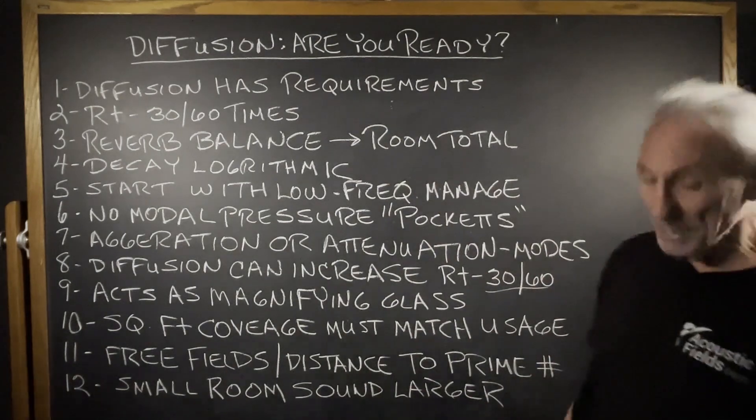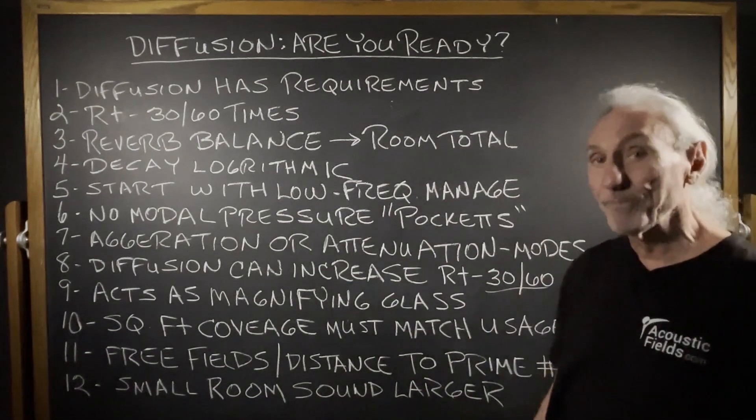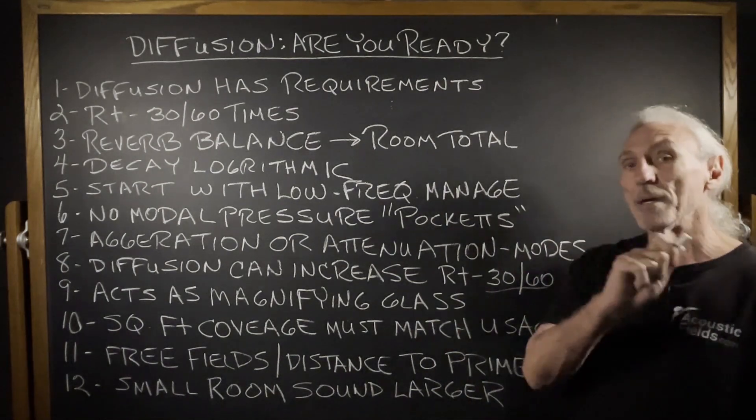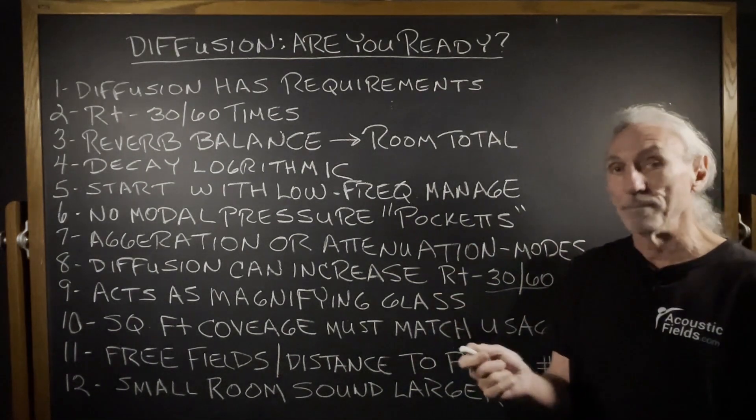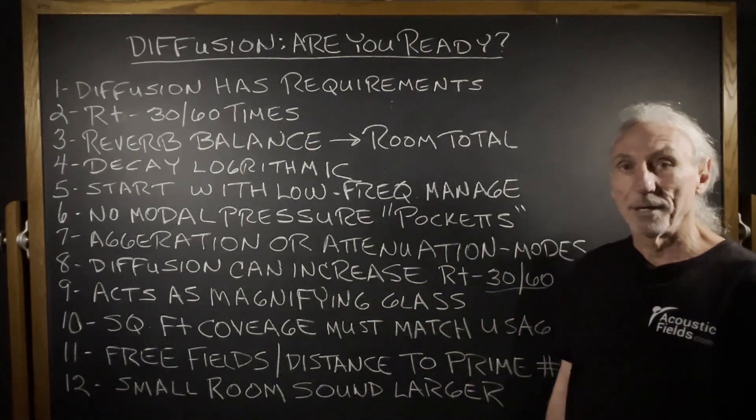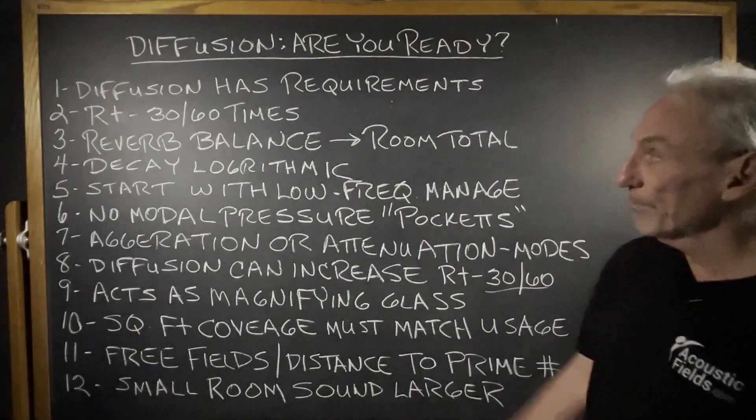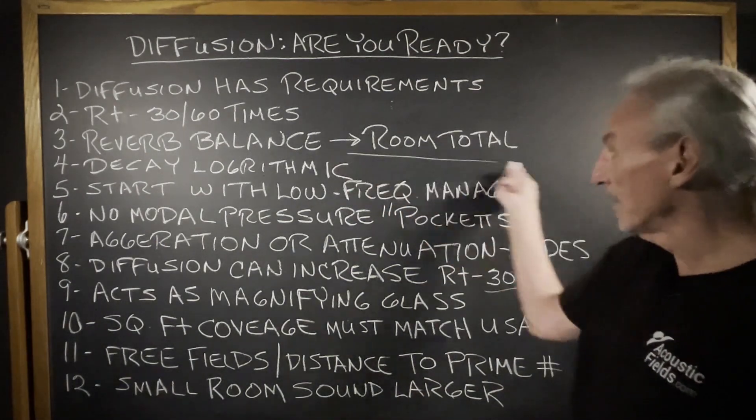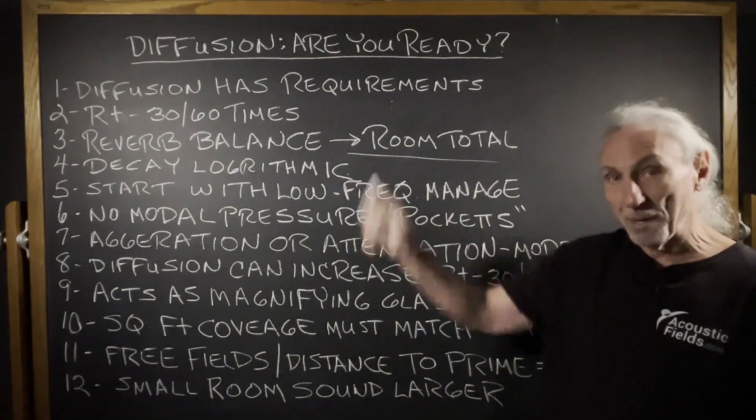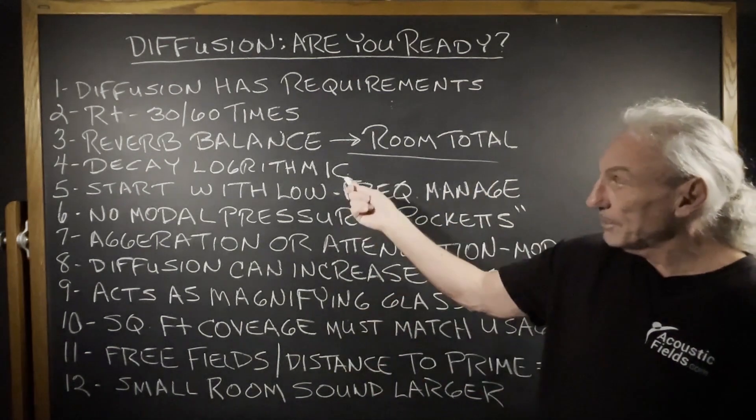RT 30 and 60 times. Decay times, reverberation times, how long the sound stays in the room must be uniform through the whole room. You can't have a hot spot in one end and a dead spot in another. So we have to have reverb balance throughout the room. The decay has to be logarithmic, no spatial irregularities in response.